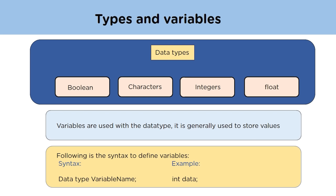The boolean keyword is used when we have two values — either true or false. These values are used when there are conditions; for example, if the condition is satisfied then it's true, otherwise it returns false. Next is the character data type, which is used when we are dealing with alphabets and symbols. It is used to hold a single character within the variable.